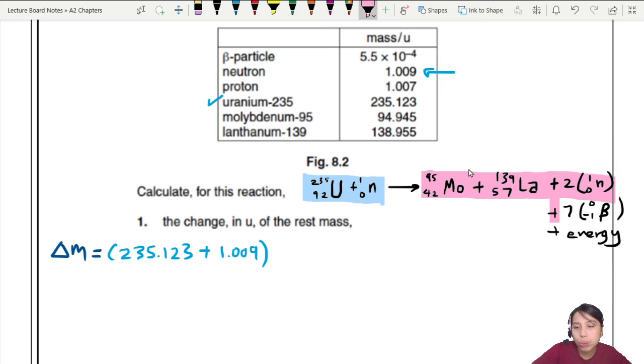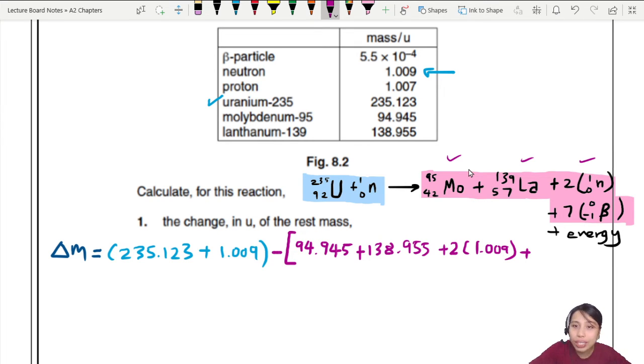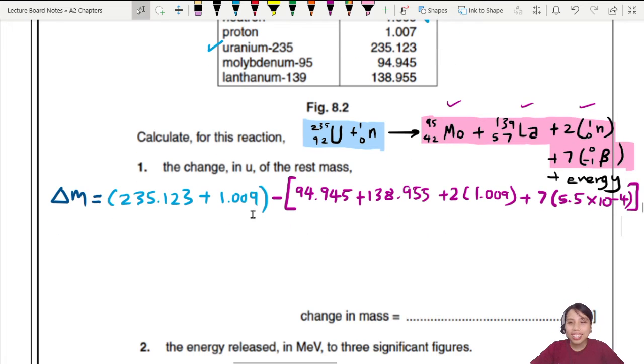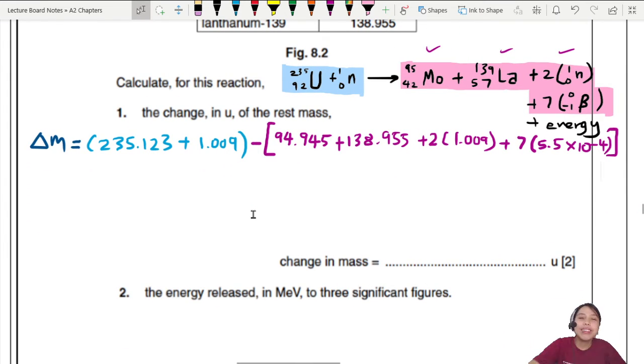After reaction we got all kinds of products - all these pink color ones on the right. All these have mass, so we're going to add together all their masses but we're going to minus them. Let's put in molybdenum-95: 94.945 is the rest mass. Lanthanum: 138.955. Molybdenum, lanthanum, two neutrons so two of 1.009, and seven betas. These are beta-minus emissions - they also have a tiny mass. A bit small, but seven of them make a big difference, so we've got to include them: seven of 5.5×10⁻⁴. Make sure you press the calculator very carefully because this is such a long calculation.